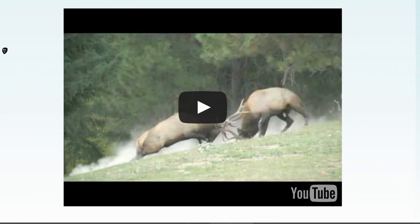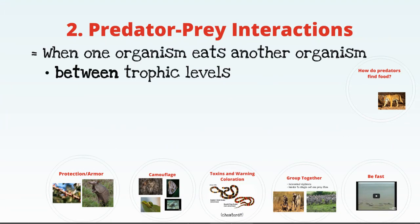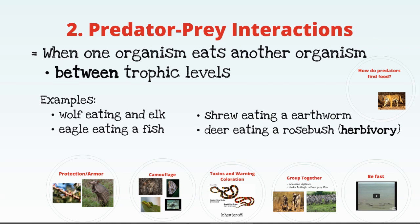This video is an example of intraspecific competition. The next kind of interaction is predator-prey. This is when one organism eats another organism — an interaction between trophic levels. Examples include a wolf eating an elk, an eagle eating a fish, a shrew eating an earthworm, and a deer eating a rosebush. All of these are predator-prey interactions.